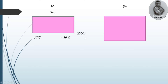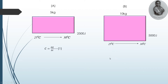Now consider another body B, which is bigger — having a weight of 10 kilograms — and we are again going to rise the temperature from 25 degrees Celsius to 30 degrees Celsius. Since the mass is twice that of body A, the energy needed is double, so 5000 joules. The basic formula for heat capacity is C = ΔQ / ΔT, where ΔQ is the amount of energy provided to the system to rise the temperature ΔT. For body A: heat capacity = 2500 / 5 = 500 joule per Kelvin.